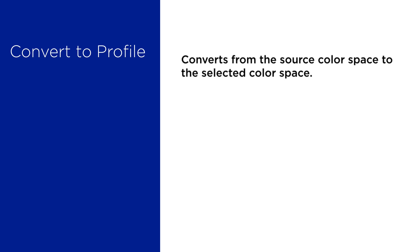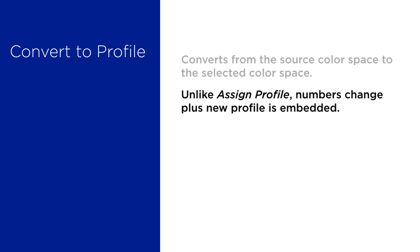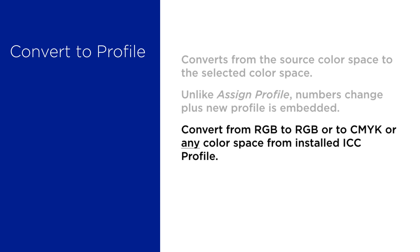Now let's look at the Convert to Profile command. This is different from the Assign Profile command — it's actually used to convert from one color space to another, and we're going to do that often in a color managed workflow. Unlike Assign Profile, it not only changes the way the images appear on screen, it changes the numbers as well. We can use Convert to Profile for any conversions: RGB to CMYK, RGB to RGB, CMYK to RGB, etc.